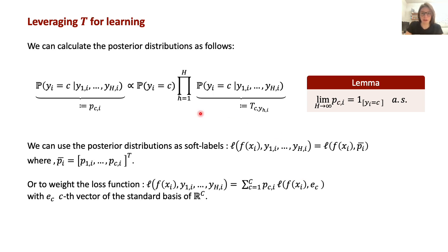Using Bayes' theorem, we can compute the posterior probabilities of the true labels, leveraging T, the noise transition matrix. Notice that as the number of annotators grows in the limit, the posterior converges to the Dirac delta distribution centered in the true label, almost surely.